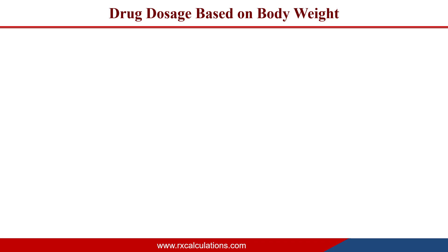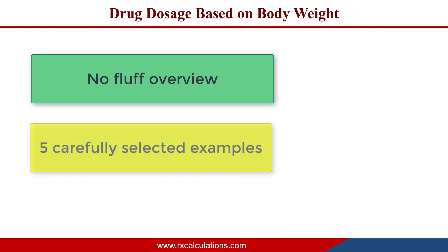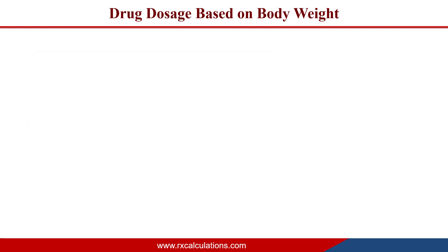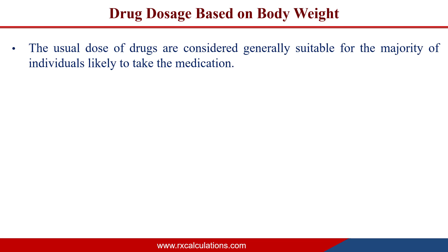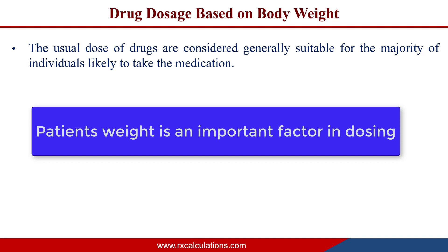In this tutorial, I'm going to give a brief no-fluff overview on calculating drug dose based on body weight, and then we'll look at five carefully selected examples that illustrate the various ways in which you are likely to encounter calculating drug dose based on body weight. For most drugs, the usual dose is generally considered suitable for the majority of individuals taking the medication, likely because of the wide therapeutic range of those drugs.